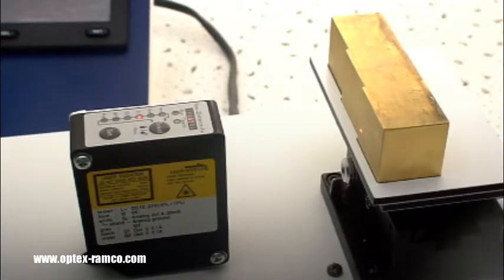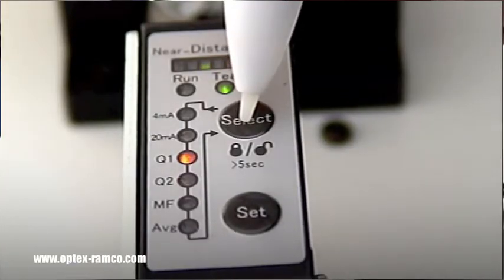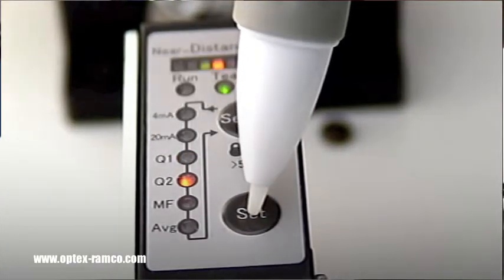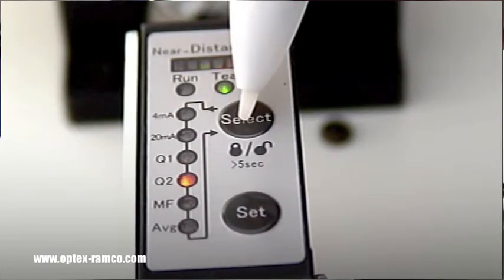Then move the target to the position for the second output. Press the select button to go down to Q2 and then press the SET button to teach the sensor.